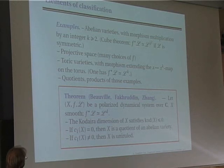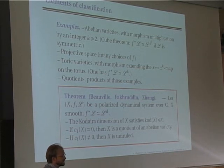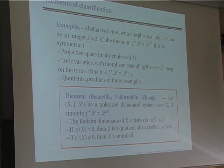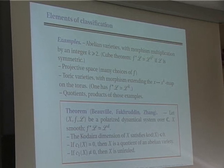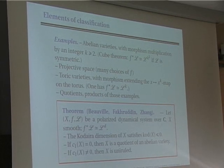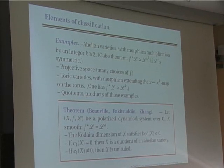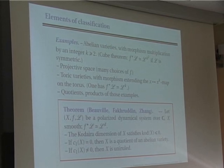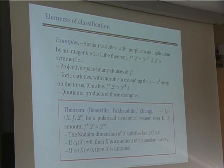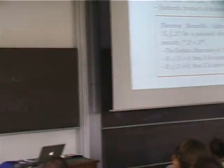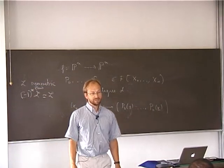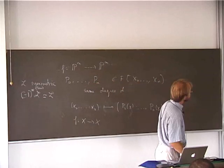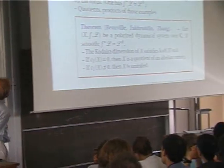Abelian varieties with morphism multiplication by an integer k greater than 2. There is a theorem in the theory of abelian varieties called the cube theorem, which tells you that if the line bundle L is symmetric — meaning the pullback of L by the multiplication-by-minus-1 map gives L again — then f* of L is isomorphic to L to the power k squared. And k squared is greater than 2 if k is greater than 2.